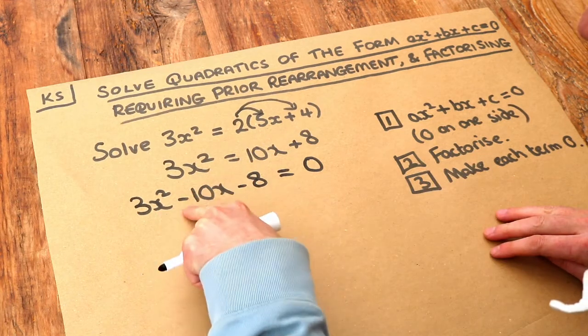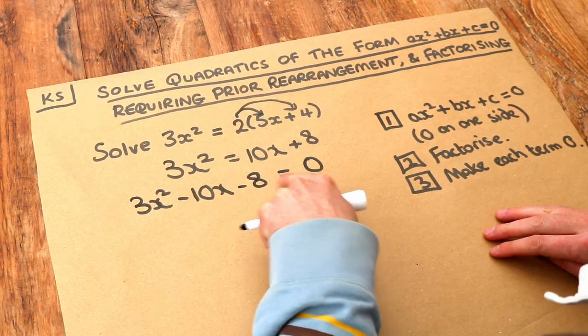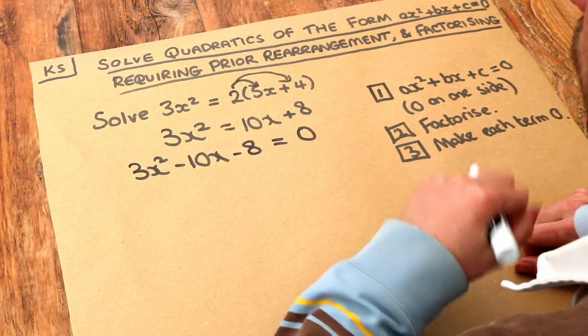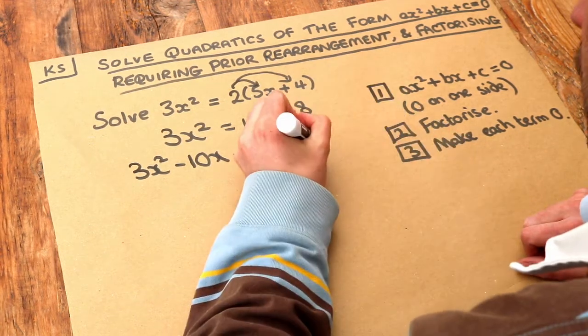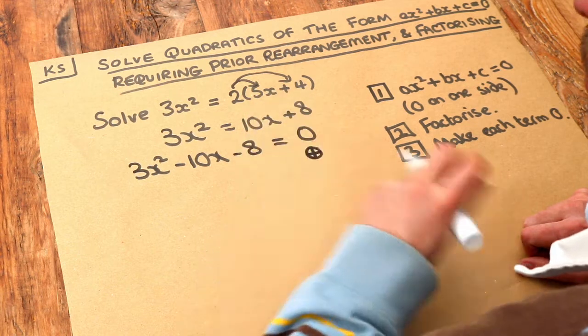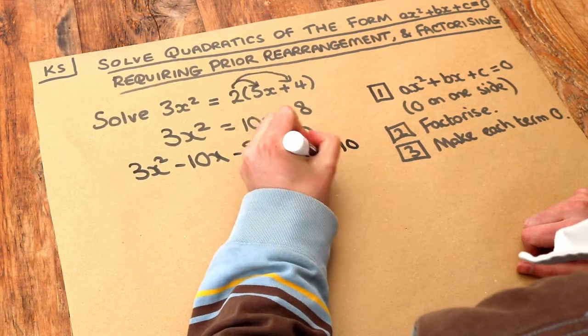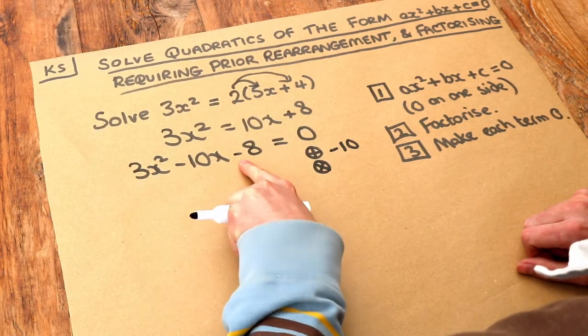So we've now done step one. We've got it in this form, something X squared plus something X plus something or minus something equals zero. So the next step is to factorise. Now, the way I did this in a previous video is I found two numbers which added to give the middle number of minus 10 and multiplied to give the first times the last number.